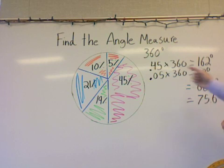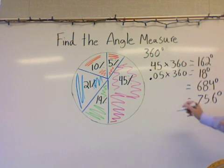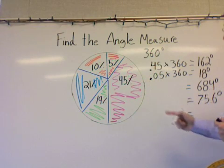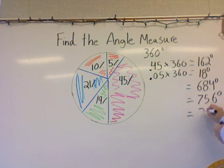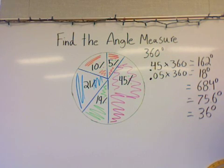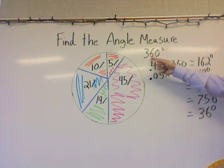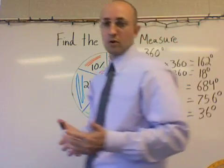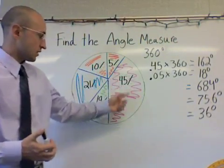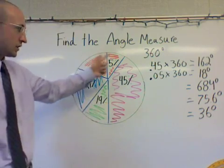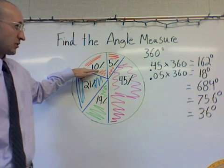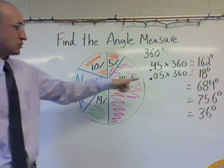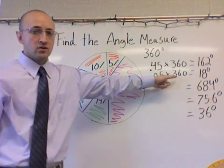We have one more left — the 10%. We want to multiply 0.10 times 360, and I end up with an answer of 36 degrees. Now if we wanted to check our work, we can go back and add up all of our degrees. If it equals 360, we know that we did our work correctly. In order to find the measurement of each angle when given a percent, we take the percent, turn it into a decimal, and multiply it by 360 degrees — because that is the total measurement of a circle.